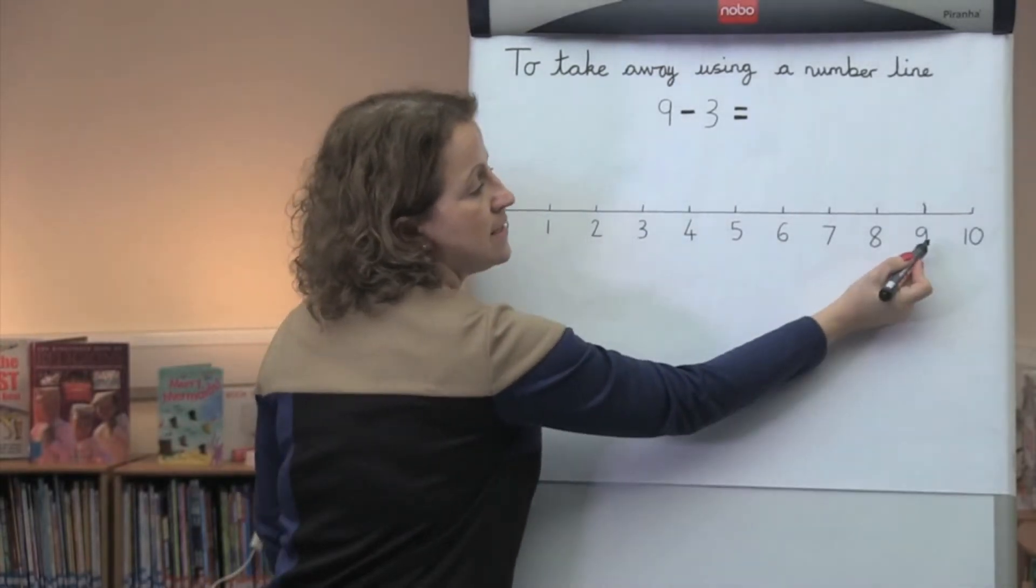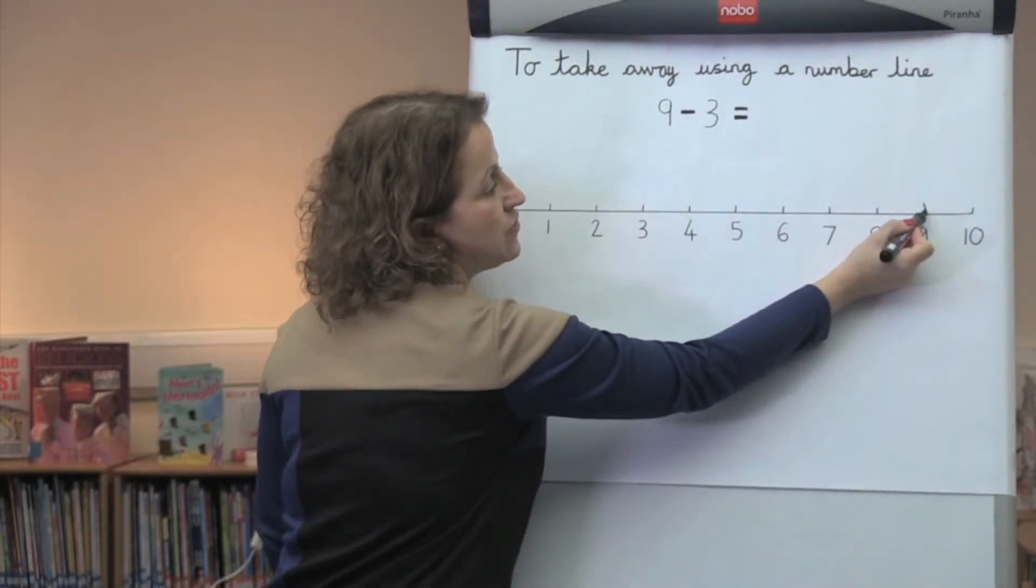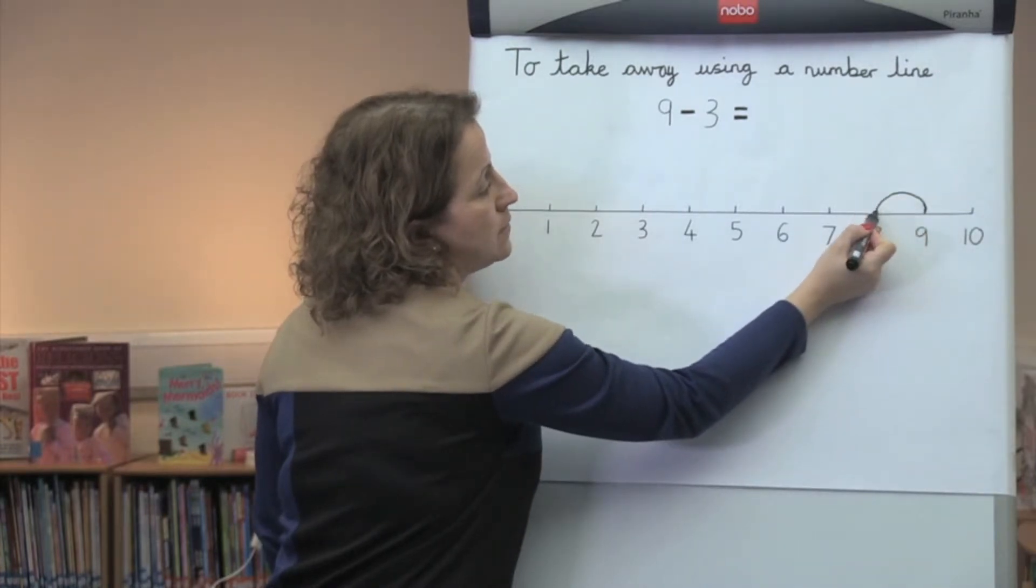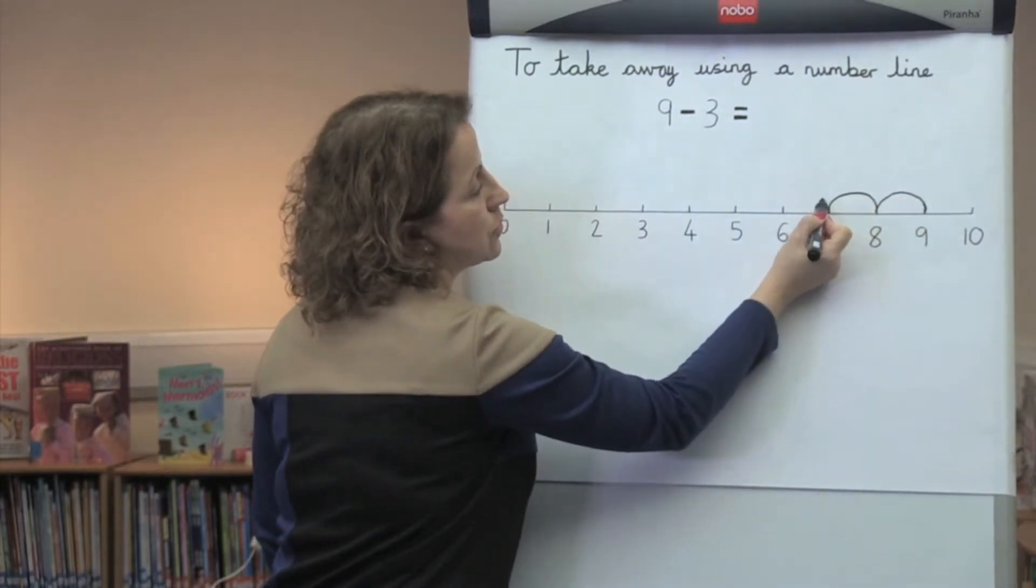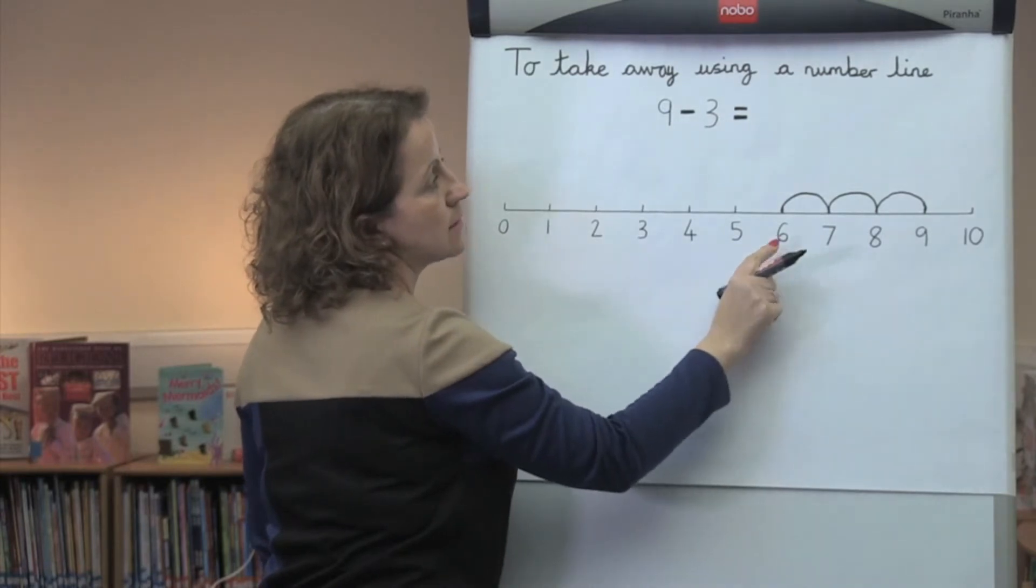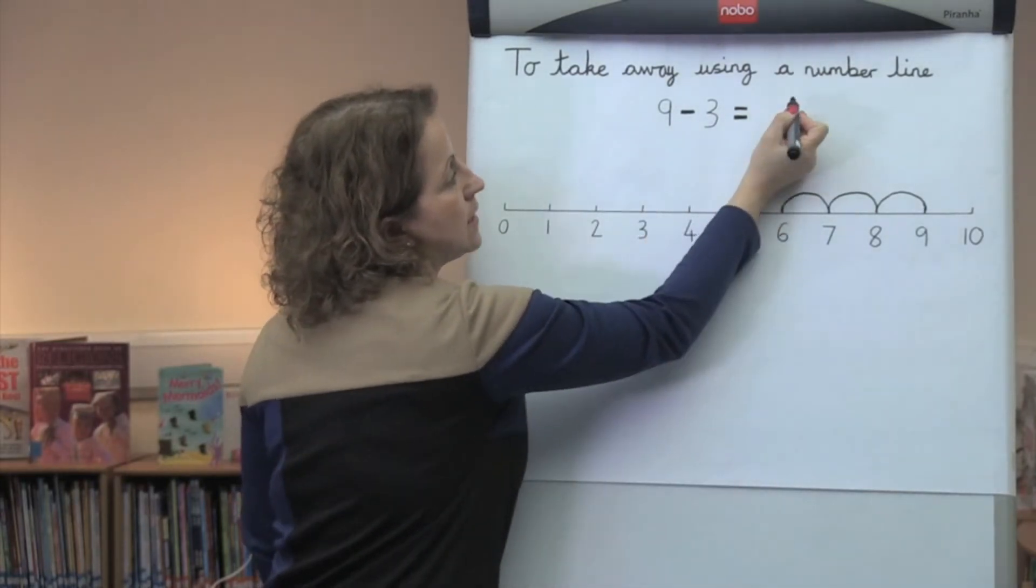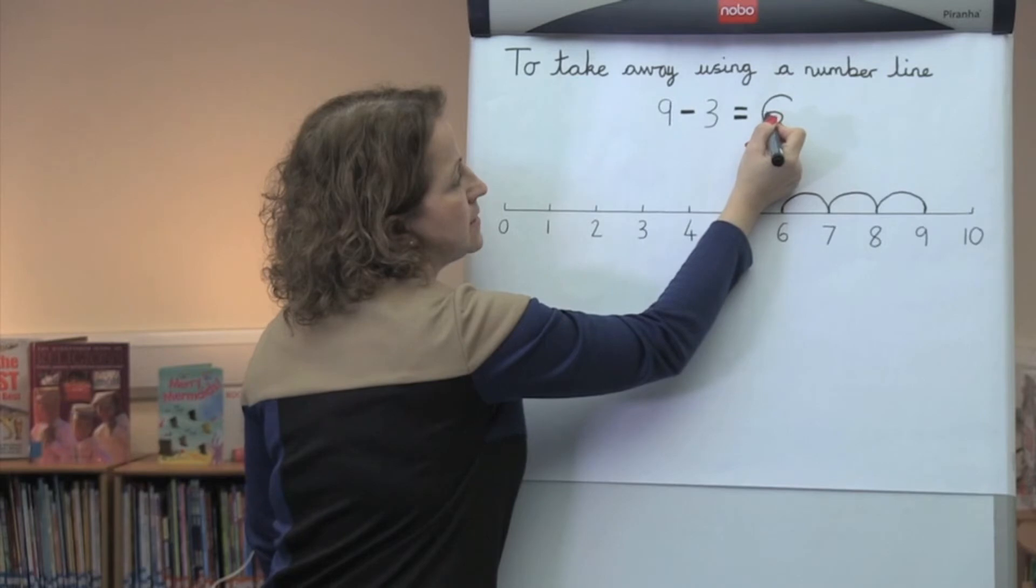With a pen, start at 9, jump backwards 3 steps: 1, 2, 3, and the answer is 6. 9 take away 3 is 6.